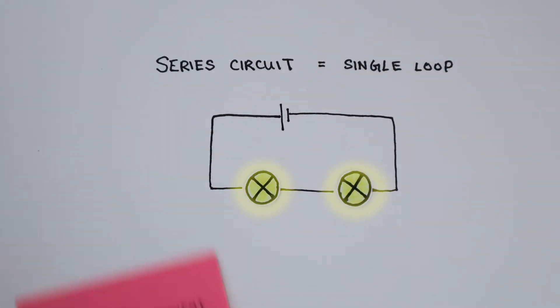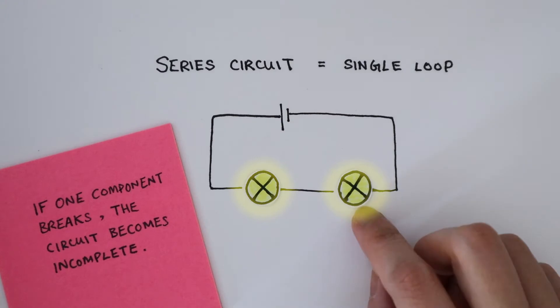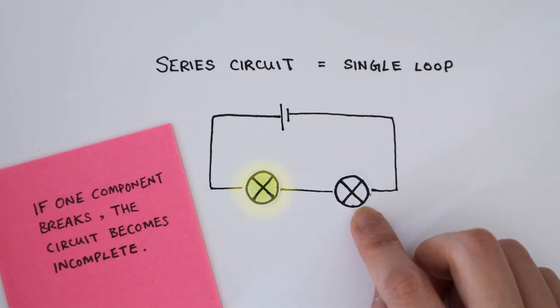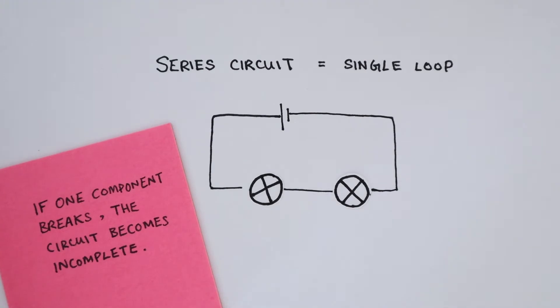The disadvantage of using a series circuit is that if one of these bulbs breaks, the circuit becomes incomplete so that none of the components would work.